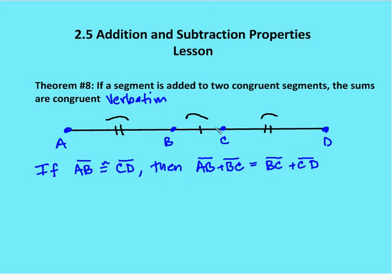So again, if a segment BC is added to two congruent segments AB and CD, the sums are congruent. Now I want to make sure that when you write the reason out for this particular theorem, you write it out verbatim. So not 'addition property,' but write out: if a segment is added to two congruent segments, the sums are congruent.